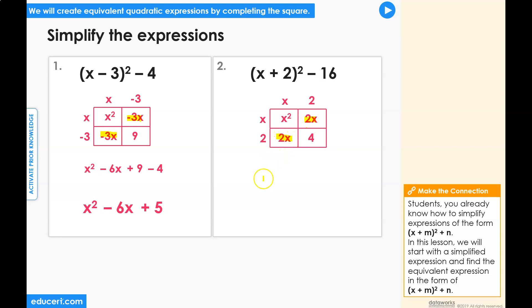Bringing these terms out of the box model and combining the like terms, you get x squared plus 4x plus 4.